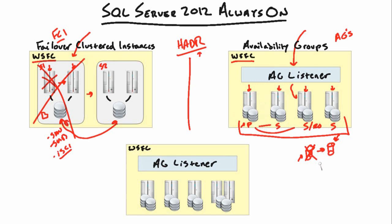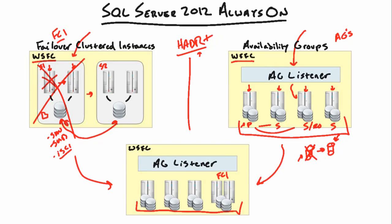Now backup operations are on one active secondary, read-only operations are on another secondary, and we can still set up yet another secondary to act as a failover partner with real-time synchronization. If you want to be incredibly cool, you can combine these technologies — what I like to call HADR+. We can create an availability group where one of the replicas sits inside of an FCI, giving us high availability and disaster recovery on top of high availability and disaster recovery.